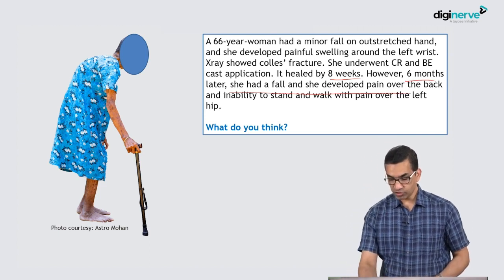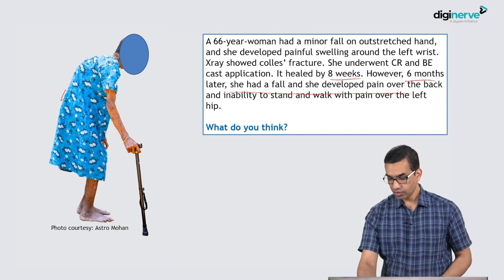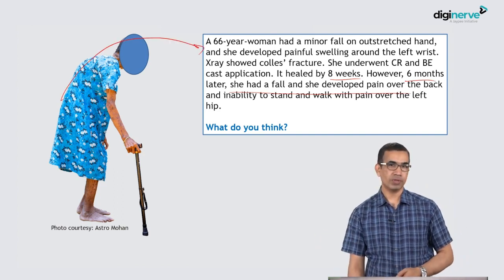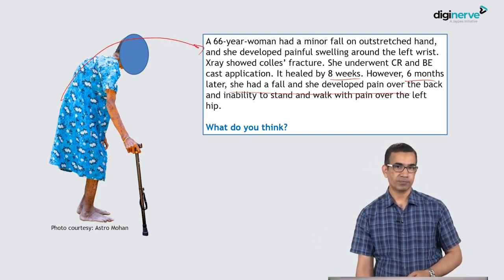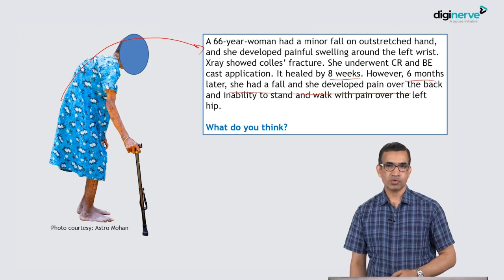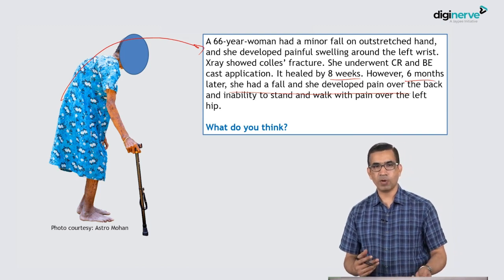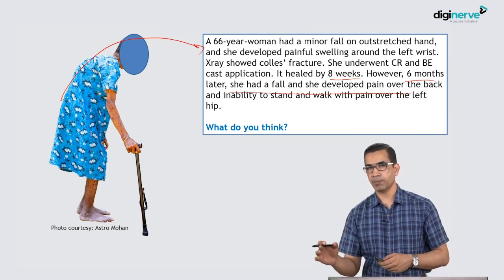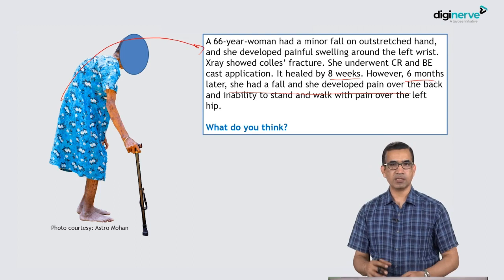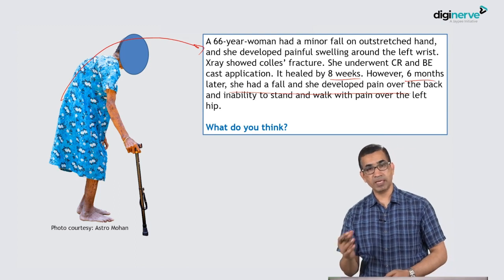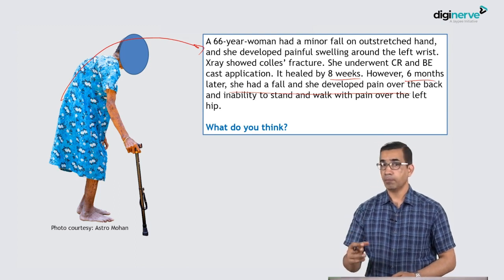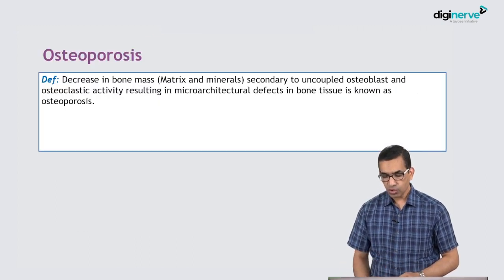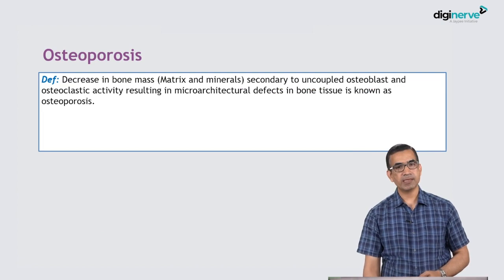With this kind of picture, what do you think she is having? She is having some falls, developing fractures around the hip, fractures around the wrist, and fractures possibly around the back. Yes, you would have probably guessed it right.